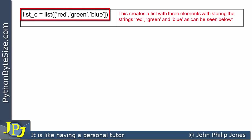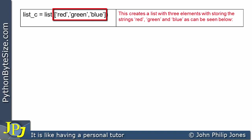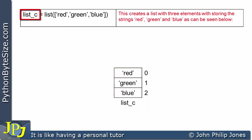Here is another program statement that will create a list. The name of the list is list_c, and it's assigned by invoking the constructor of the list class. Inside the brackets, we have a sequence that will create a three-element list with the first element having the string 'red', the next element having the string 'green', and the last element having the string 'blue'. We have a list with indices 0, 1, and 2 corresponding to red, green, and blue.